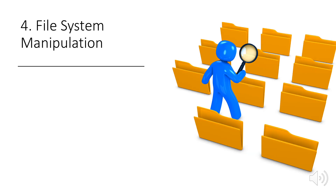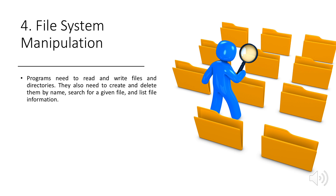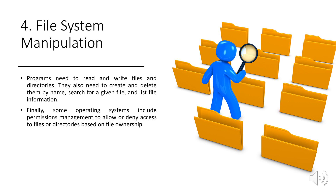File system manipulation: Programs need to read and write files and directories. They also need to create and delete them by name, search for a given file, and list file information. Some operating systems include permission management to allow or deny access to files or directories based on file ownership.